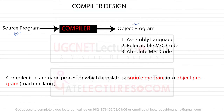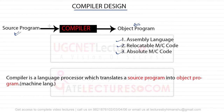The compiler takes a source program and translates it into an object program. That object program can be anything - it can be assembly language code, it can be relocatable machine code, or it can be absolute machine code. It depends on the implementation of the compiler.